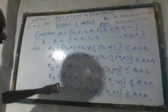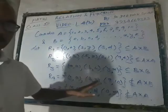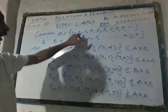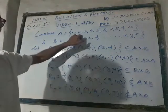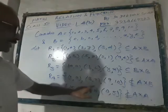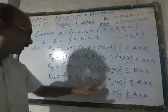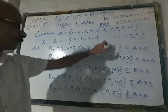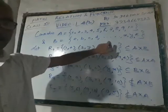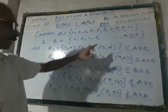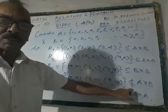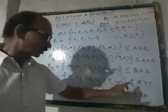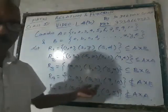What about R4? Just go on watching the elements of R4: the first components 2, 3, and 9 — they belong to A. What about the second components? a and z are elements of B, but 10 is not an element of B. That is why we say that R4 is not a subset of A cross B, and hence R4 is not a relation from A to B.